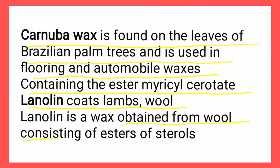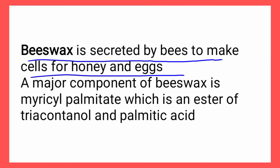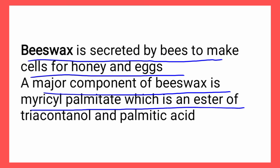Next is lanolin, which is obtained from wool that coats lambs. It consists of esters of sterols. Next is beeswax, which is secreted by bees to make cells for honey and eggs. A major component of beeswax is mericyl palmitate, which is an ester of tricontanol and palmitic acid.